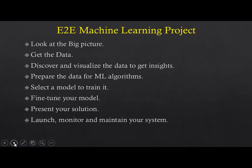Let's start with the end-to-end machine learning project flow. As per this book, these are the different steps to follow. The first step is to look at the big picture — before starting any ML project, we need to understand what the business requirement is and what is the benefit of this ML project to the business.